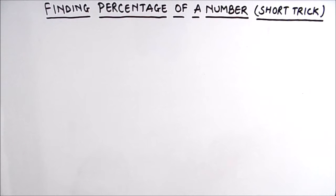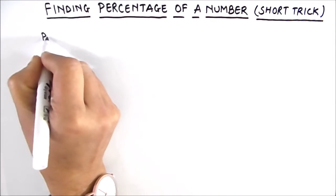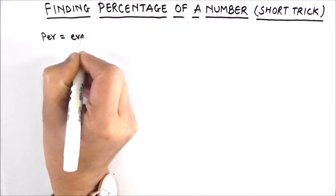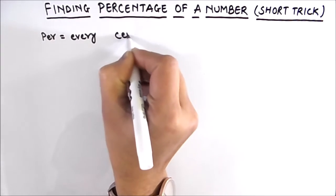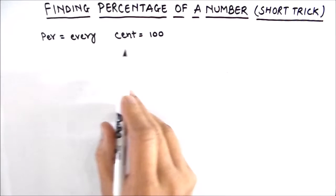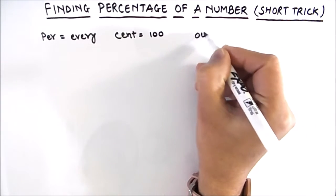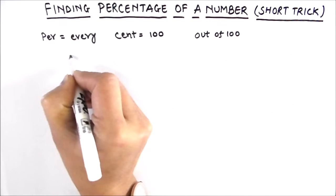Hello everyone. In this video we are going to learn how to find the percentage of a number. Percentage, as the name suggests, is made up of two words: 'per' means every and 'cent' means hundred. Whenever we talk about percentage of a number, we are saying that it is out of hundred.